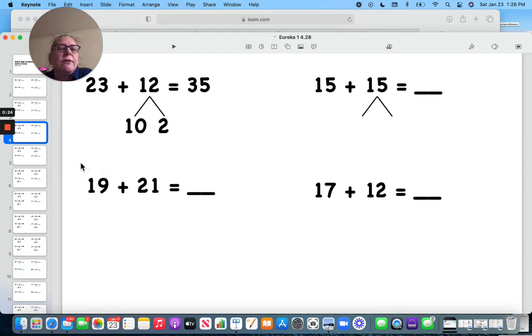Let's look at this one. 15 and 15. Let's break it apart. 10 and 5. 15 and 5 is 20. 20 and 10 is 30.